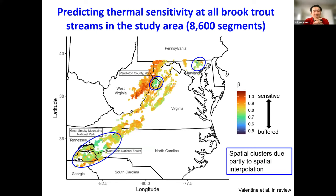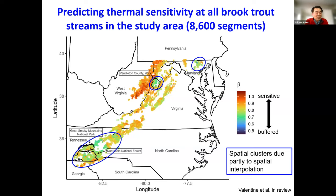While acknowledging the caveat of moderate predictive power, we used the model to predict thermal sensitivity of all brook trout stream segments in our study area — about 8,600 segments. You can notice some clusters of thermally buffered sites, one in the south and also on the eastern side of West Virginia and Maryland. These spatial clusters are partly due to spatial interpolation, but there are also definite clusters of highly buffered sites evident in the raw data.